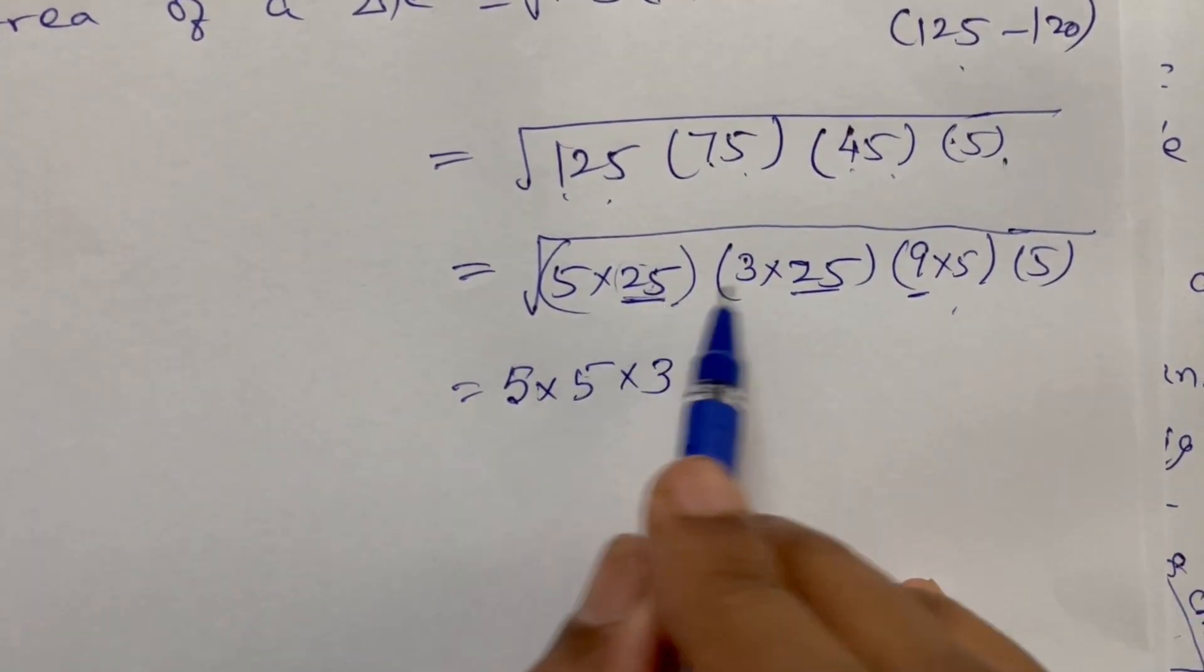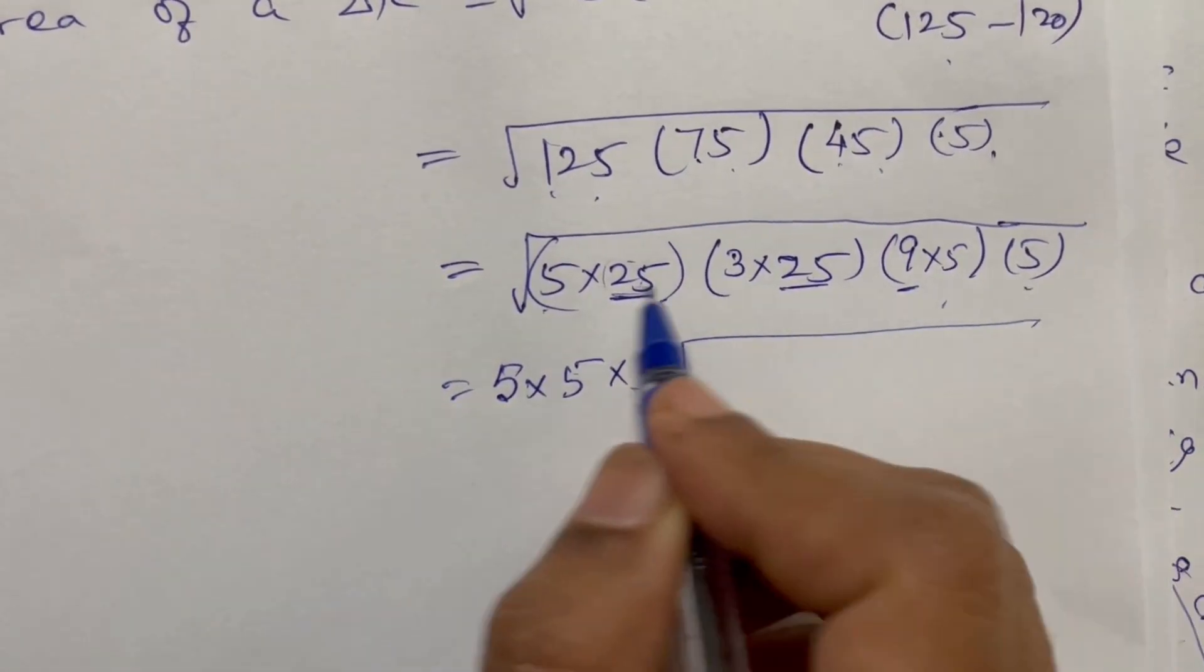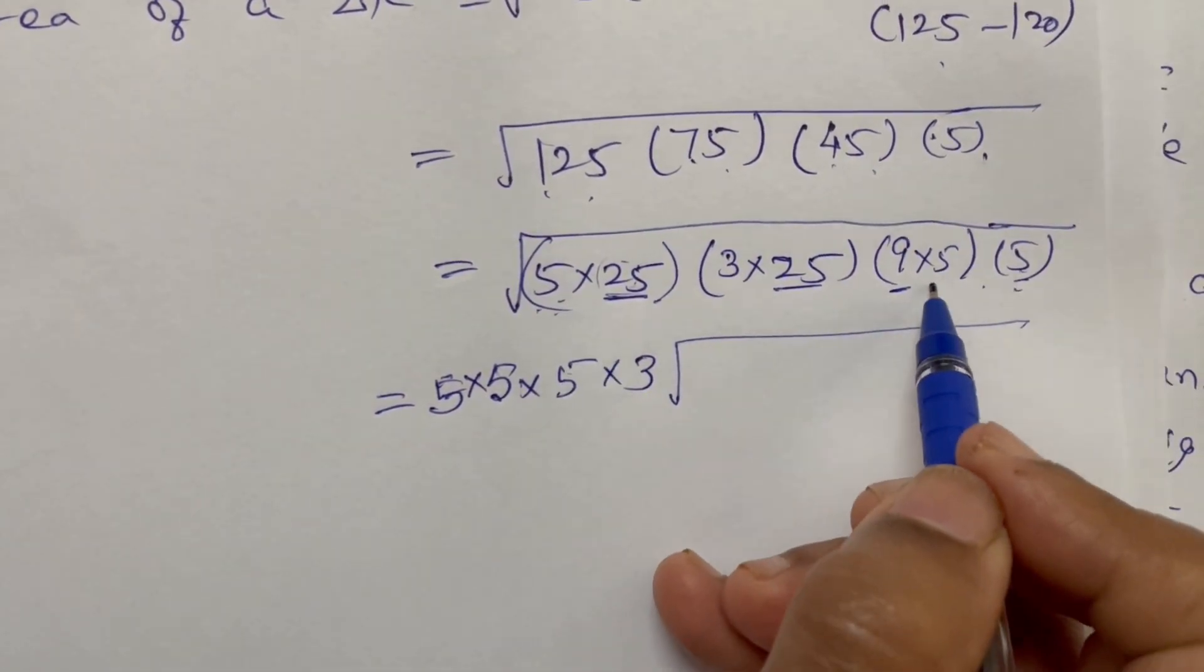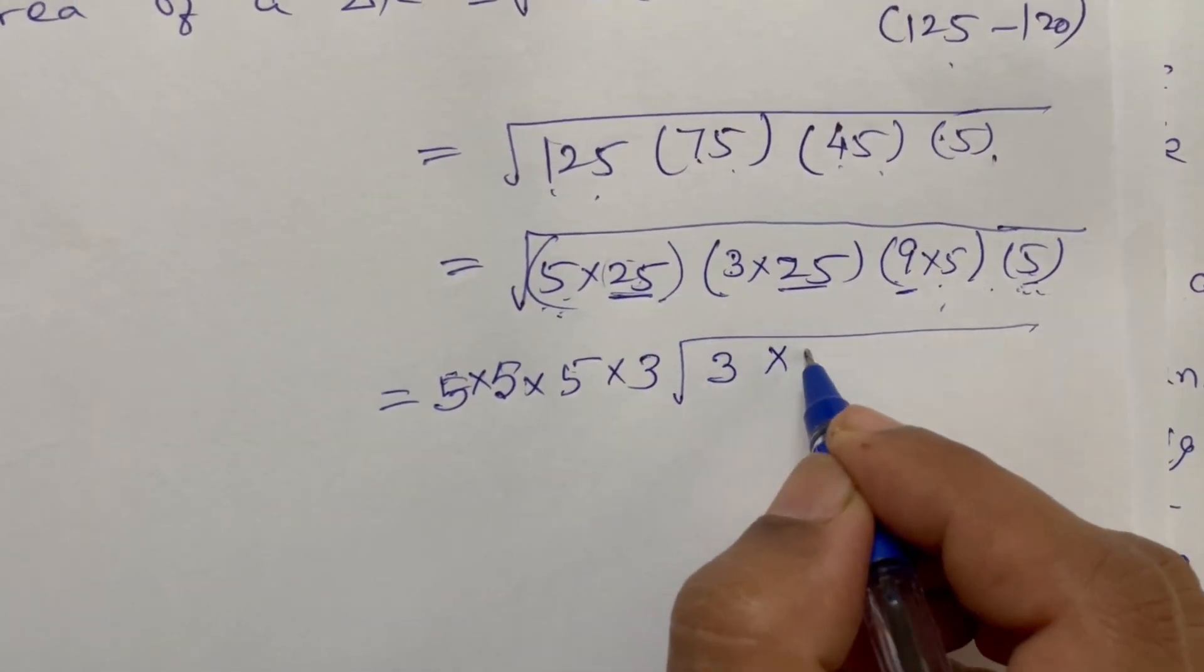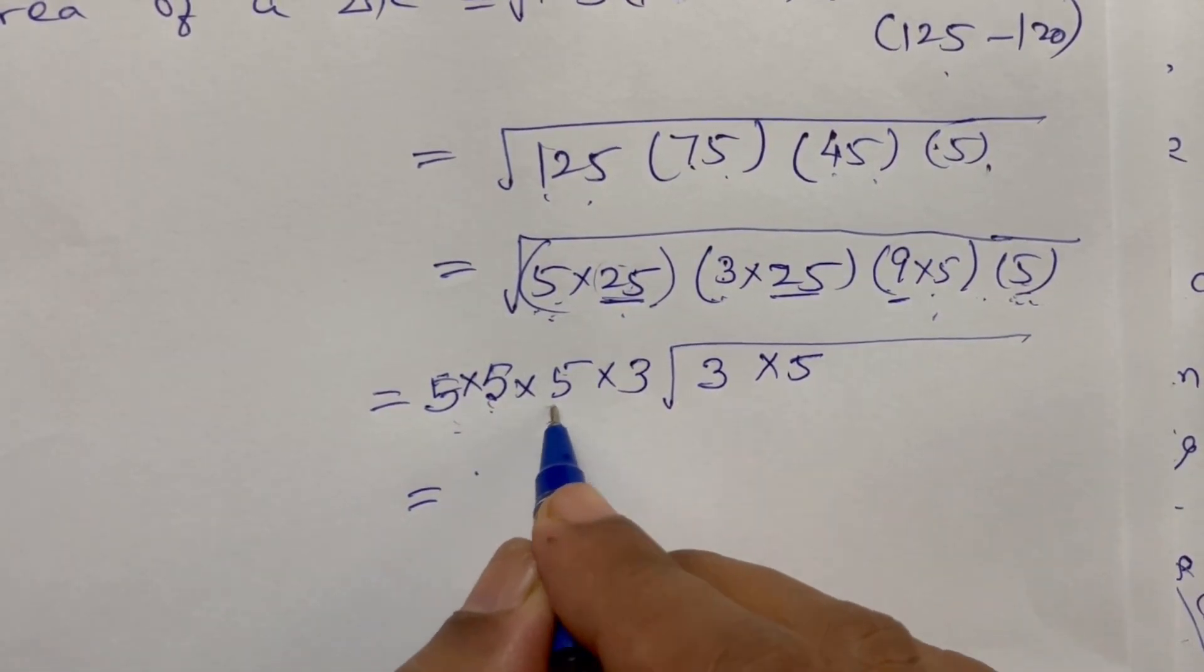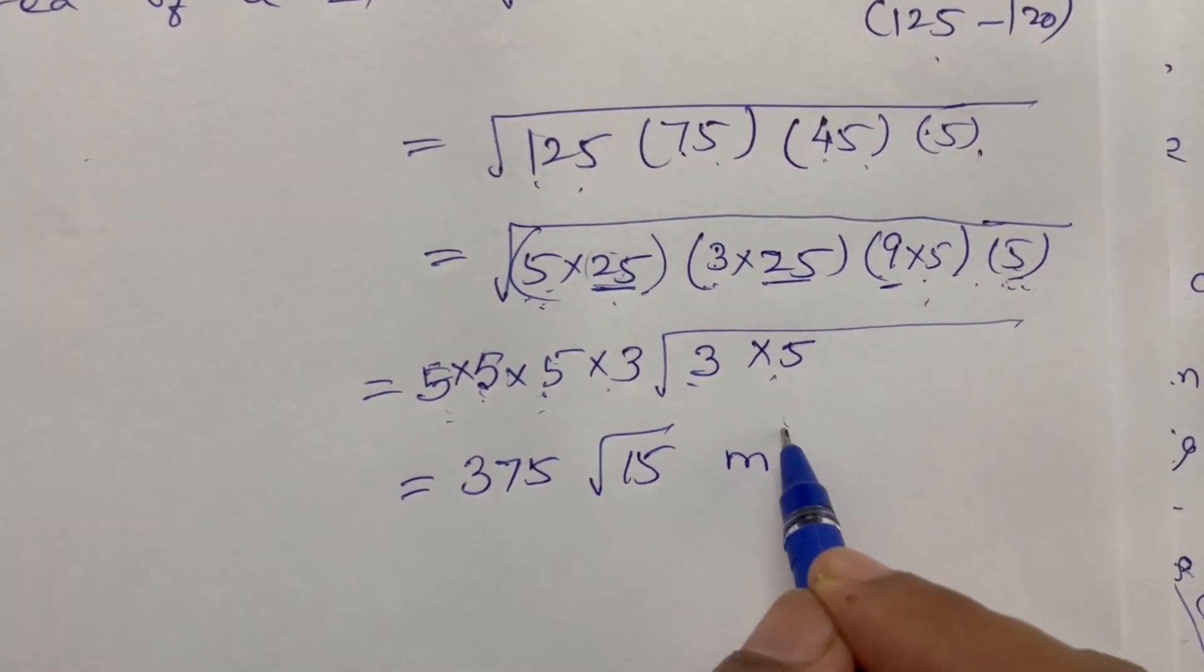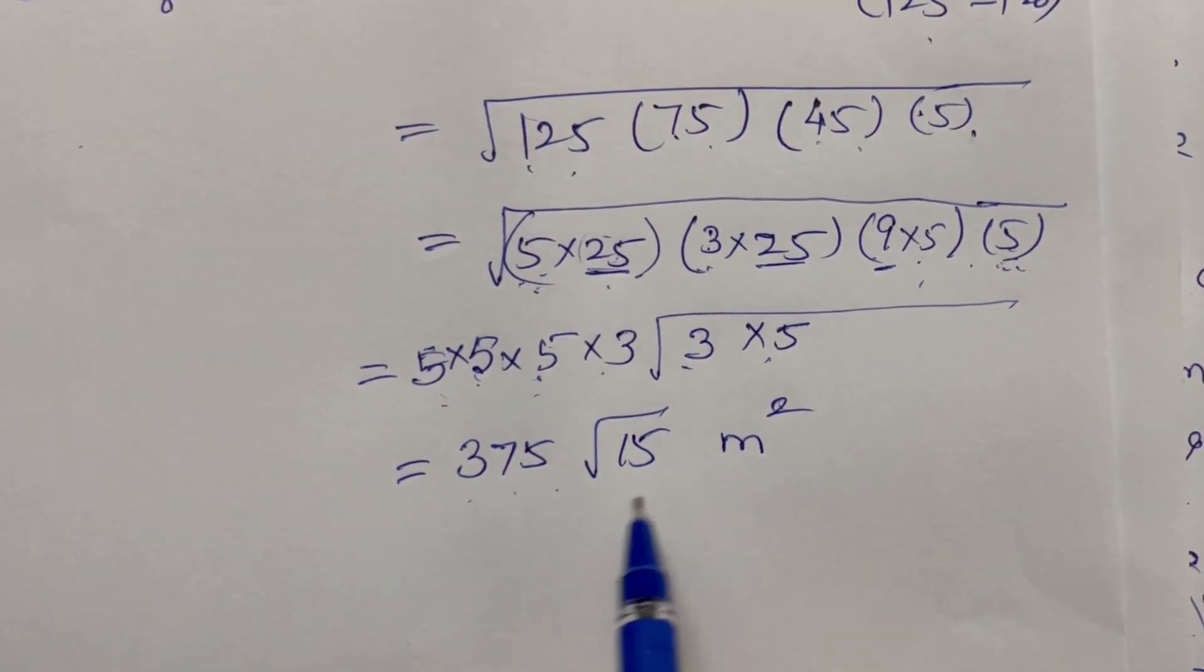Now underline values. Here is 5 and here is 5, so we can take out 5. We get 25 times 25 which is 125, times 3 is 375. So area of the triangle is 375 square root of 15 meters squared.